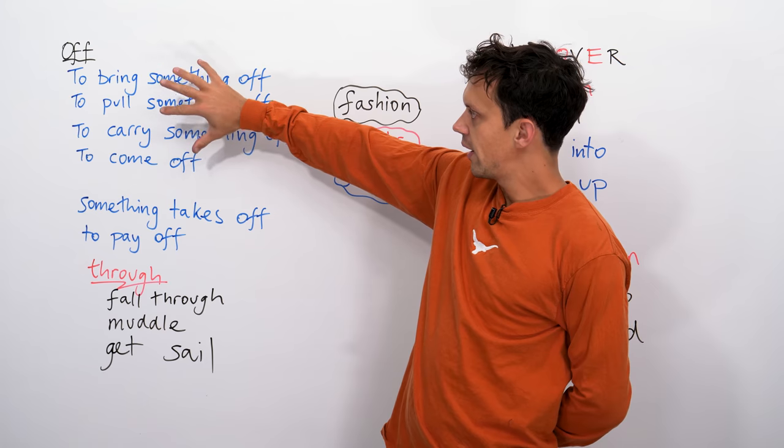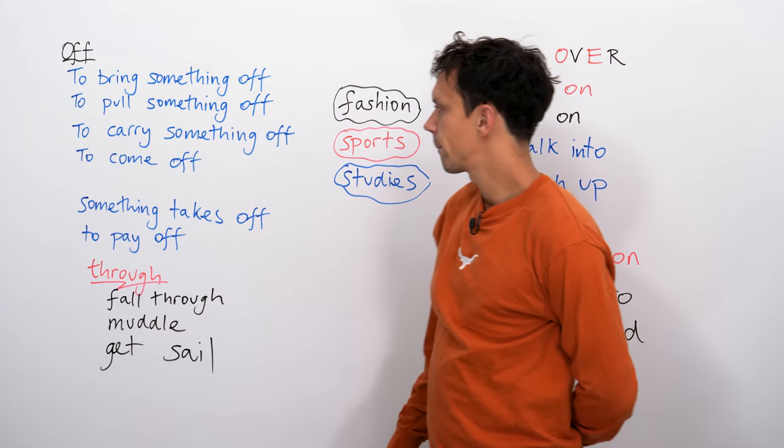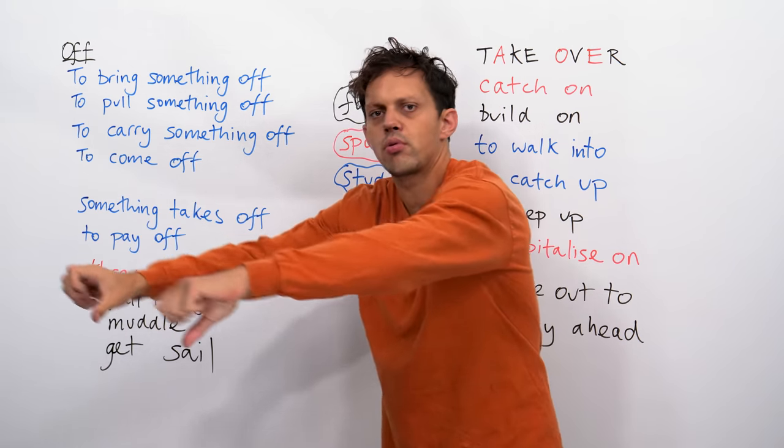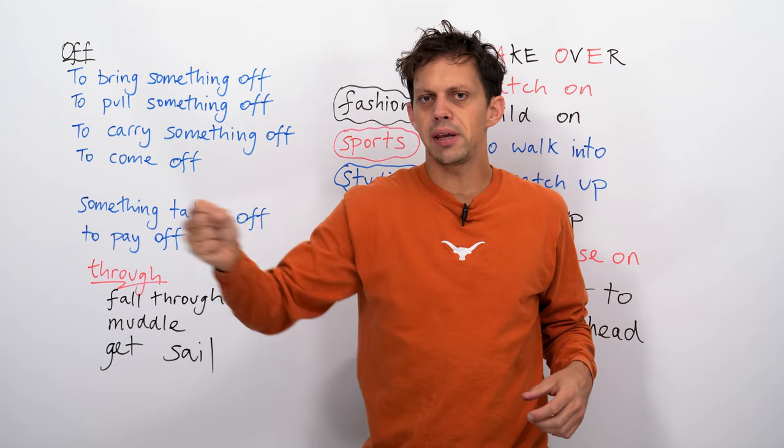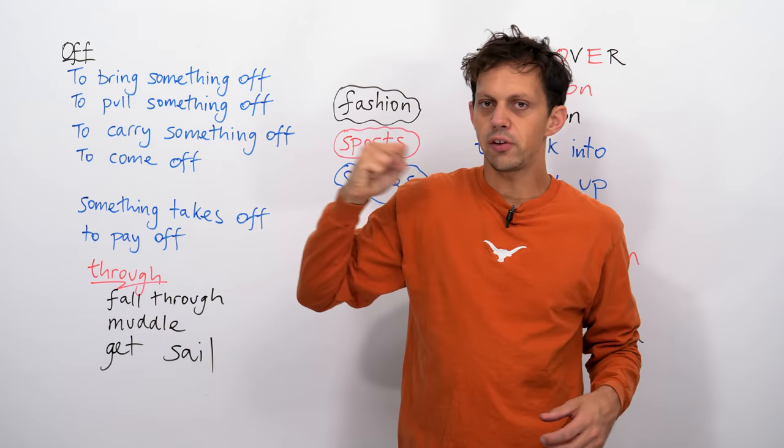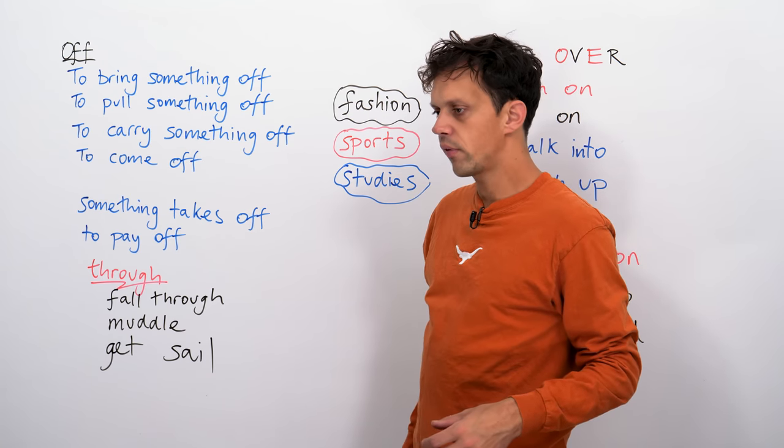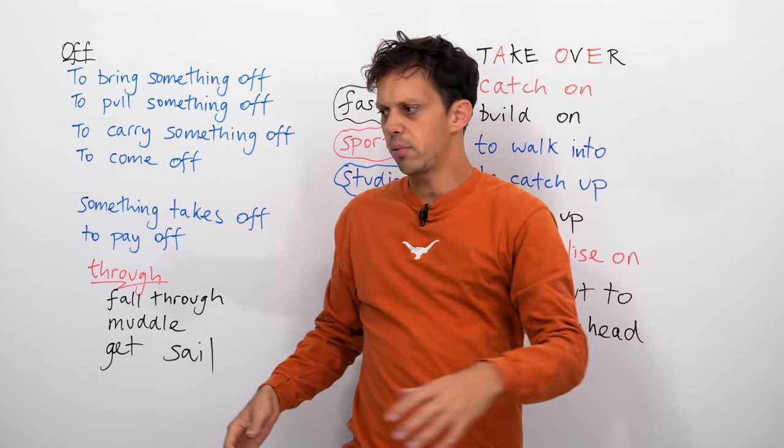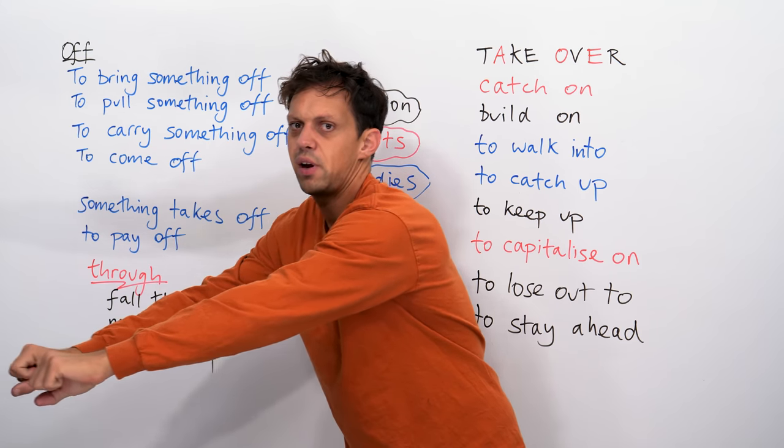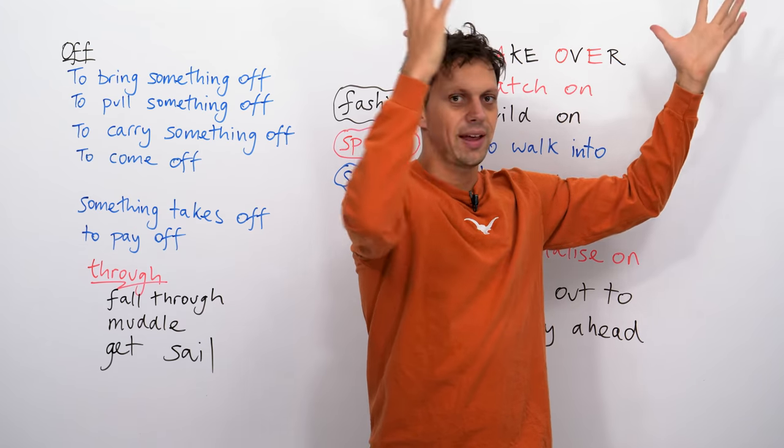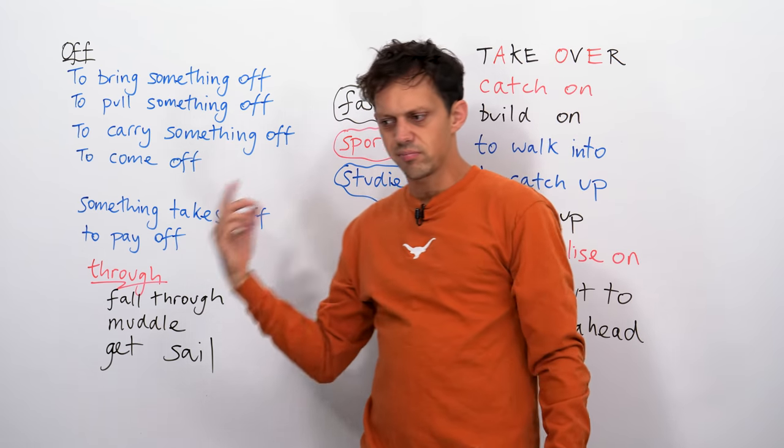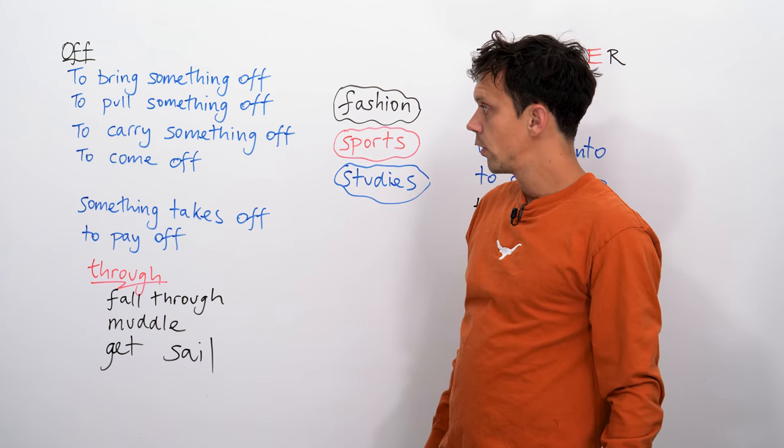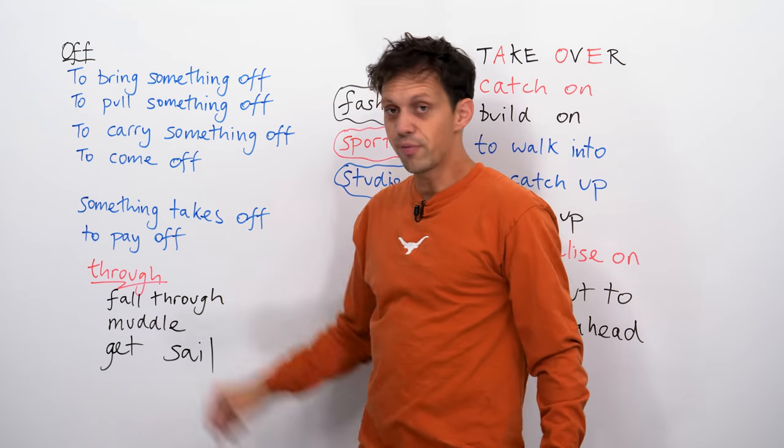My first section will have 'off' in them. To bring, it's like a physical action. Bring it over here. Bring me the remote control. If you bring something off, it's like 'off' is a place where everything works. It's looking like it's not going to be very good, and then we get it up here and abracadabra. To bring something off? Turn it around. To pull something off is exactly the same, but with a different verb.